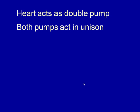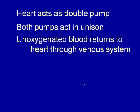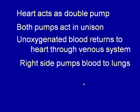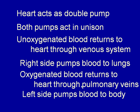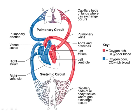The heart acts as a double pump. Deoxygenated blood returns to the heart through the venous system, and the right side pumps blood to the lungs — that's the pulmonary circuit. Oxygenated blood returns to the left side through the pulmonary veins, and the left side pumps to the body — that's the systemic circuit. Carbon dioxide-rich blood comes back to the right side, is pumped to the lungs, oxygenated, and then pumped to the tissues.